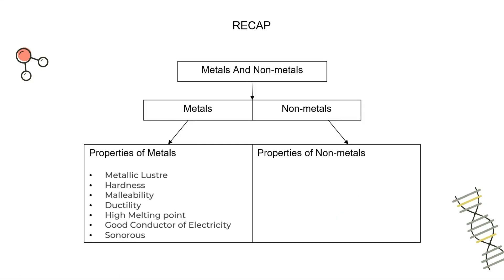So this is a chart showing what we have learnt till now — metals, non-metals and semi-metals. What are the properties of metals? We have learnt metallic lustre, hardness, malleability, ductility, high melting point of metals, and that they are also good conductors of electricity. The properties of non-metals section is empty because till now we haven't learnt about what the properties of non-metals are.